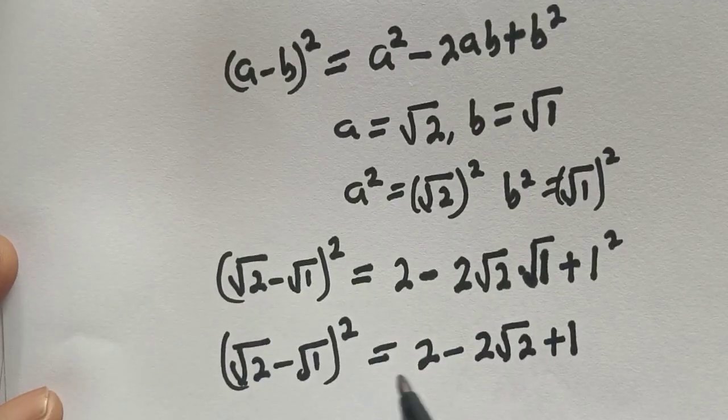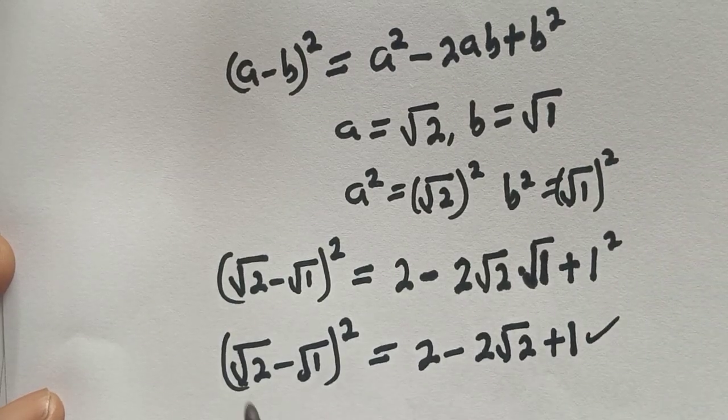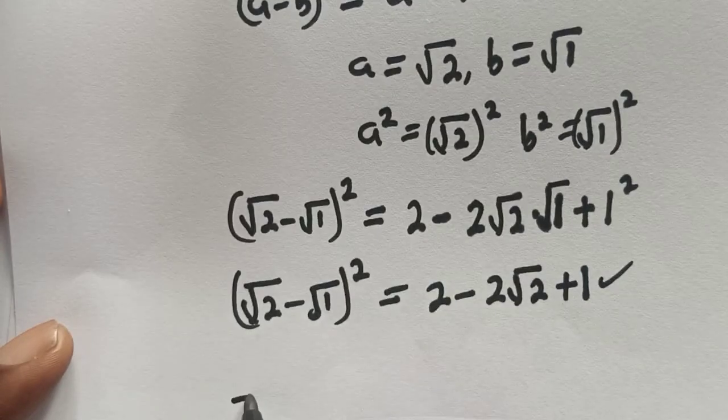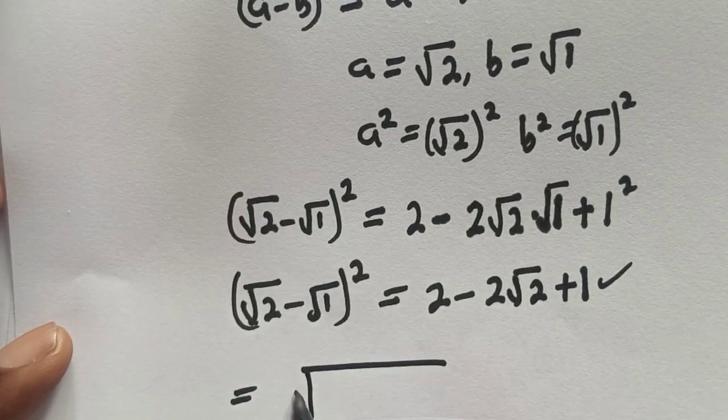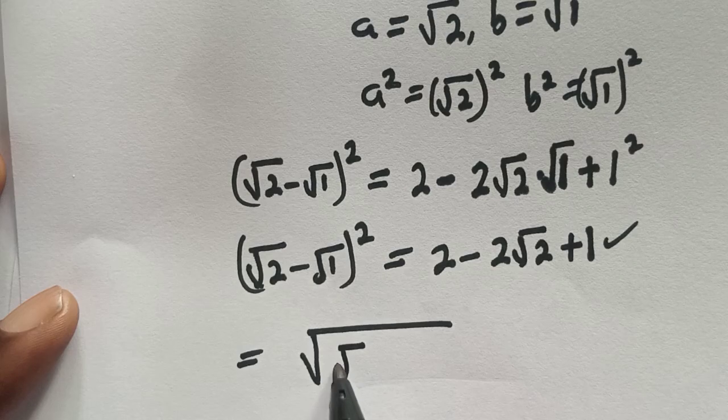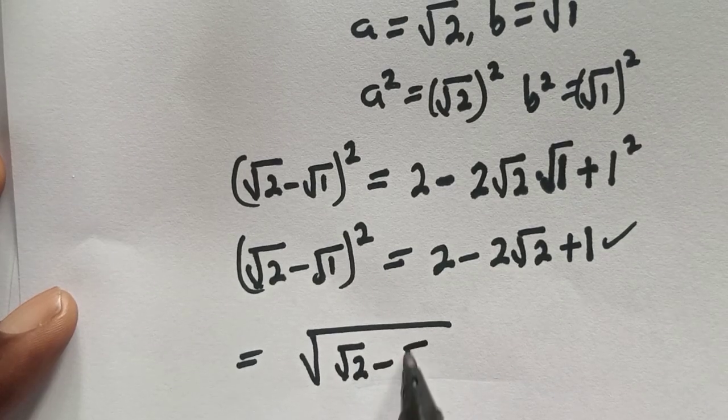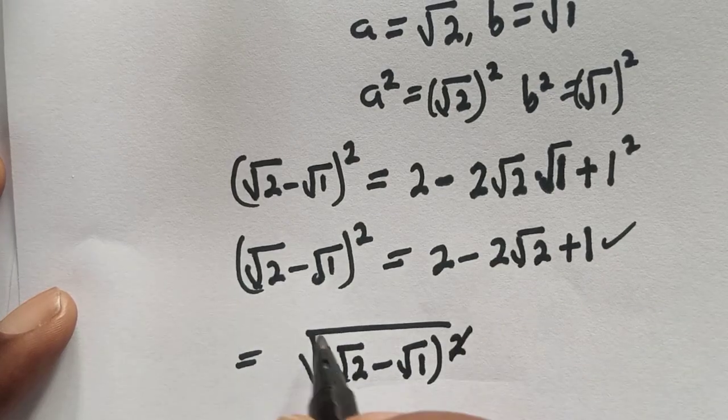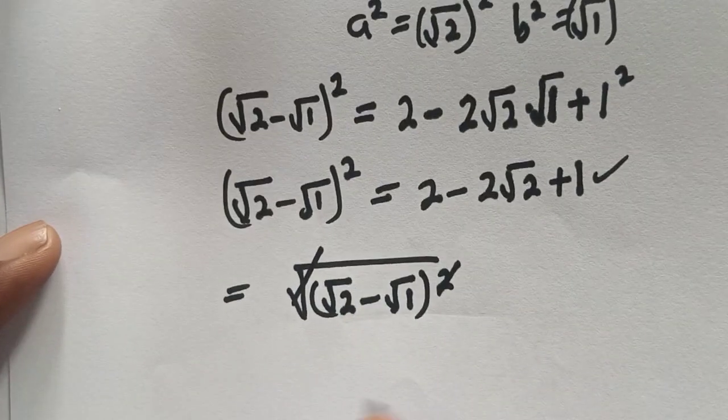So therefore we can substitute this for this. So we have square root of root 2 minus root 1 square. We can solve this.